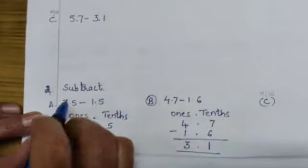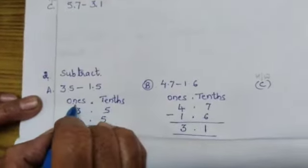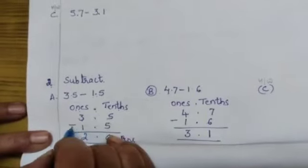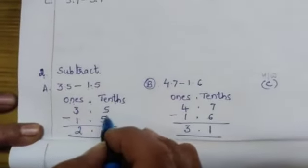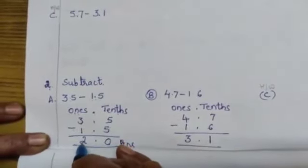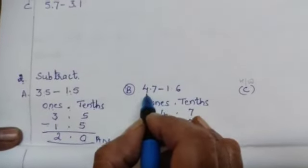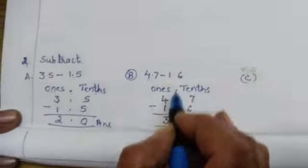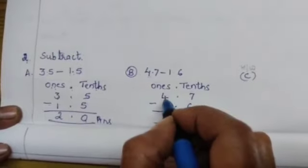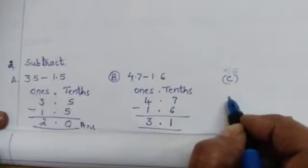Second bit, subtract 3.5 minus 1.5. Once, point, tenths. 3.5 minus 1.5. 5 minus 5, 0. 3 minus 1, 2. So answer is 2.0. 4.7 minus 1.6. Same as it is you do children, 7 minus 6 is 1, 4 minus 1 is 3. C bit, do it as homework children.